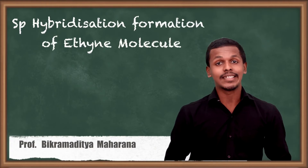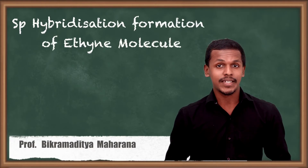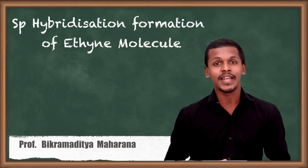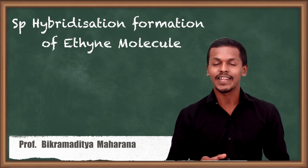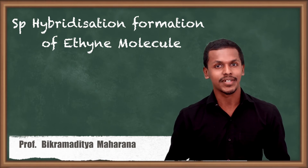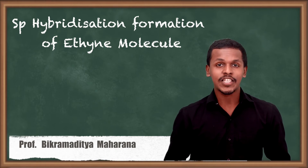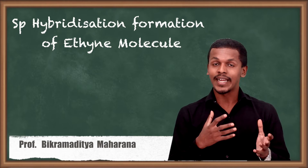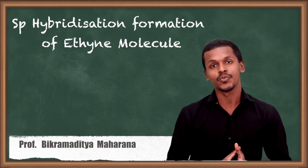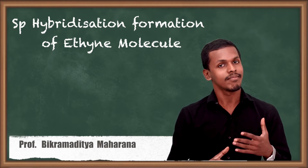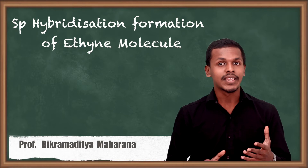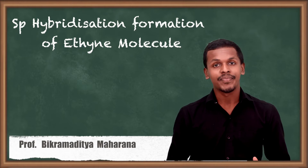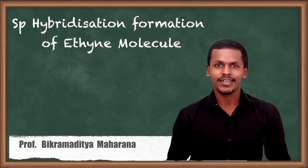In the previous lecture we talked about SP3 hybridization and SP2 hybridization, and now we are going with the topic of SP hybridization. What is SP hybridization, how does the bond form, and how does it help to form a bond with a particular orientation or symmetry? Let us talk about that with the help of an example.